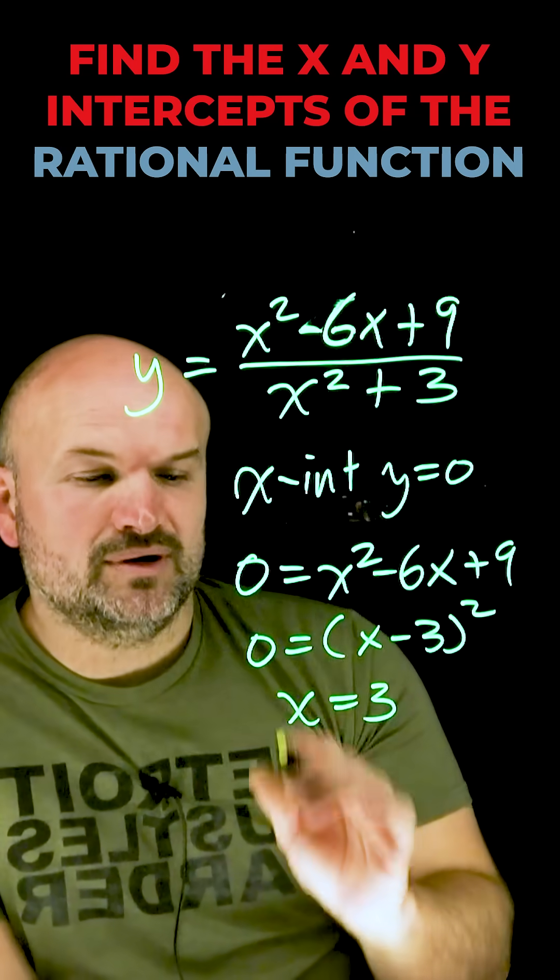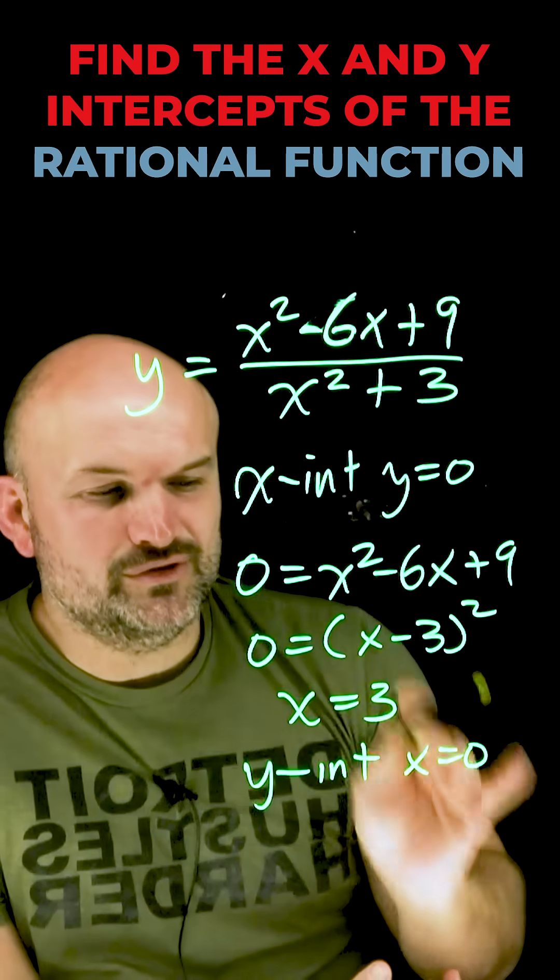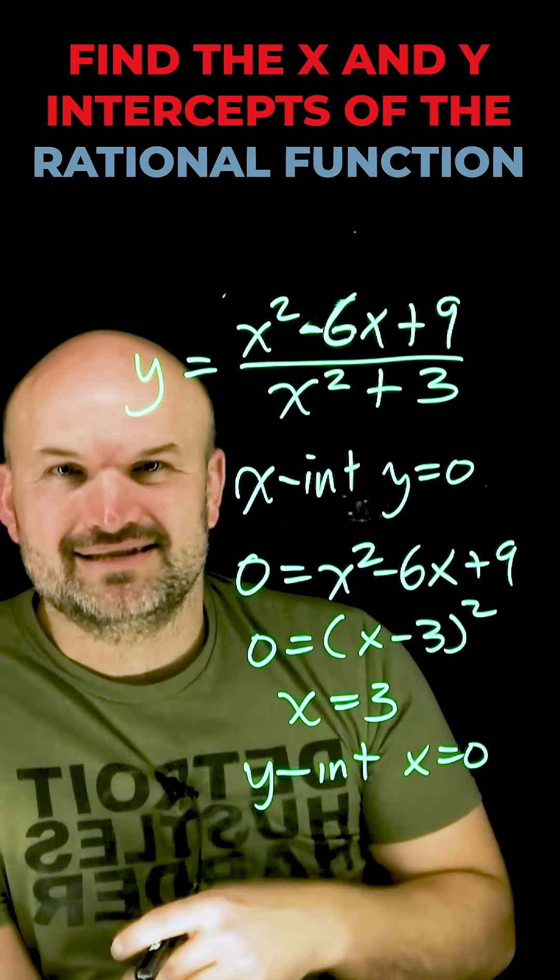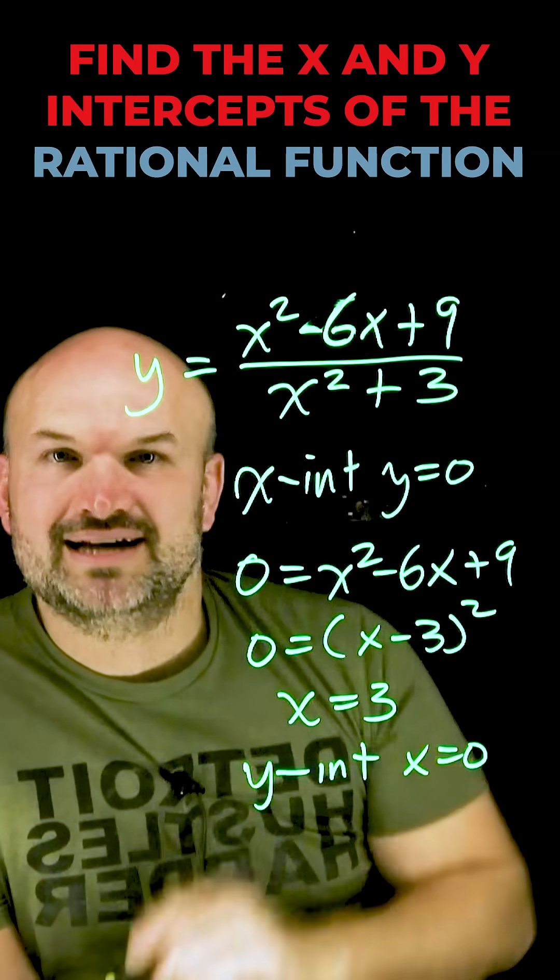For the y-intercept, remember, y-intercept is simply going to be when x is equal to 0. Again, you could plug in 0 for all these x's, but what is it going to go to? 0, 0, 0. And what are we going to be left with? The constant over the constant.